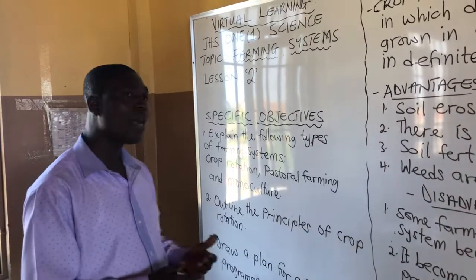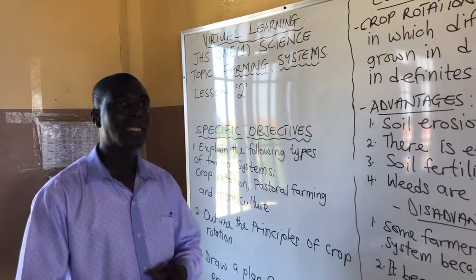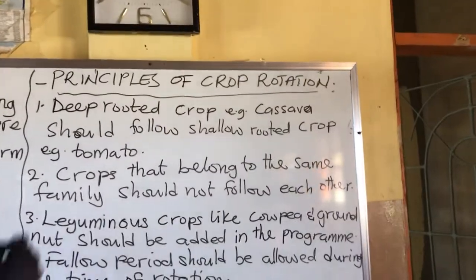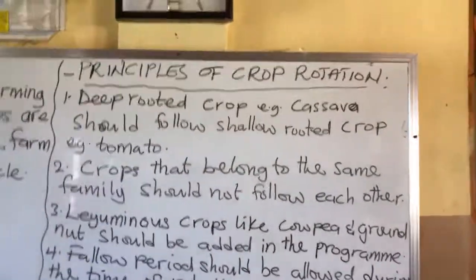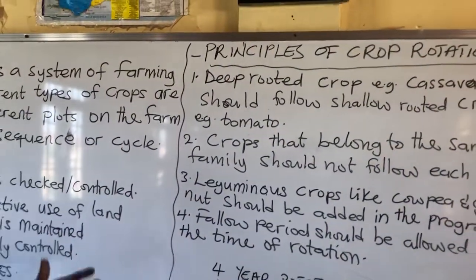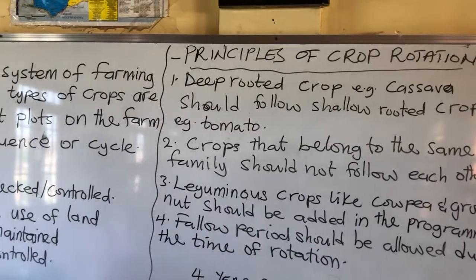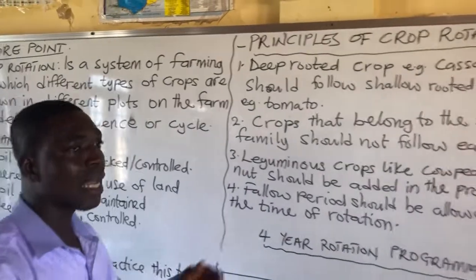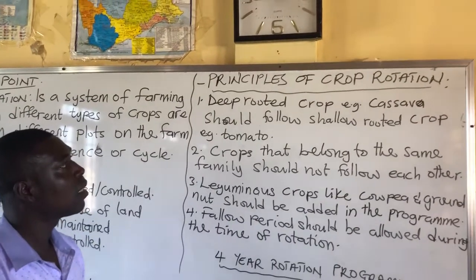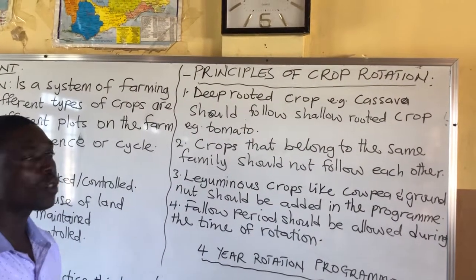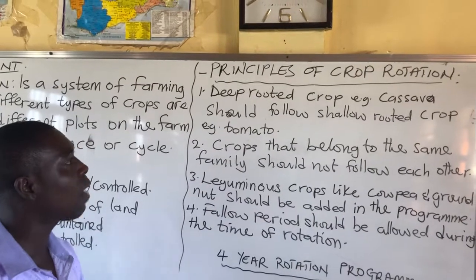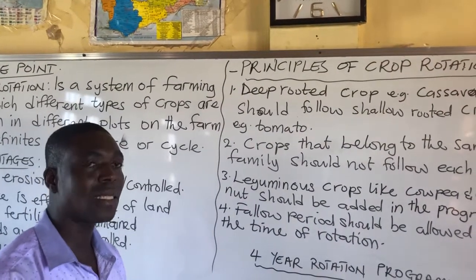An advantage of monoculture is that the farmer is able to specialize in that system. Now let's look at the principles of crop rotation. As I told you, crop rotation is a system of farming in which different crops are grown in different plots on the farm in a definite sequence or cycle, and therefore we need to understand the system well. The principles are laid-down procedures which enable the farmer to practice the farming system well.